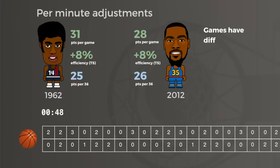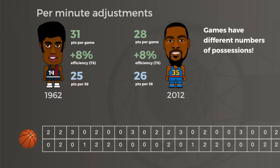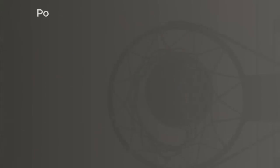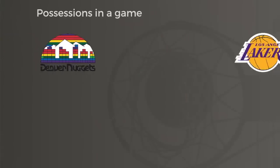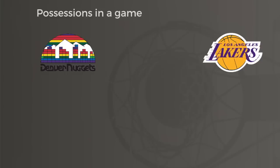Per-minute stats don't tell us how likely someone is to score on each possession. Back in part one of this series, we compared Michael Adams to Magic Johnson, and in 1991, Adams' Nuggets scored 120 points per game, and Magic's Lakers just 106.